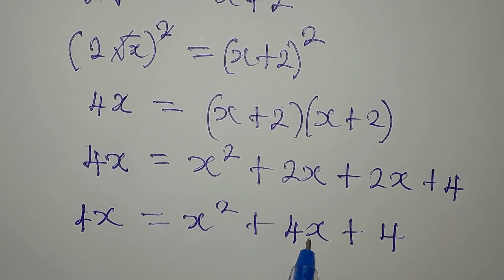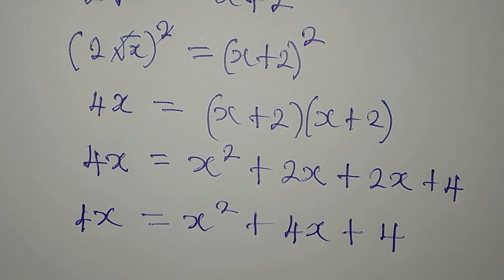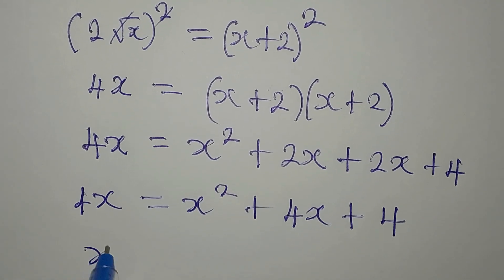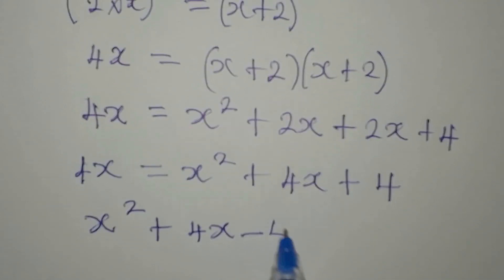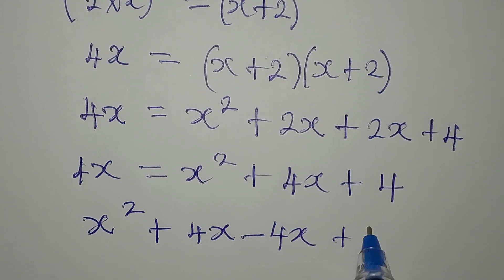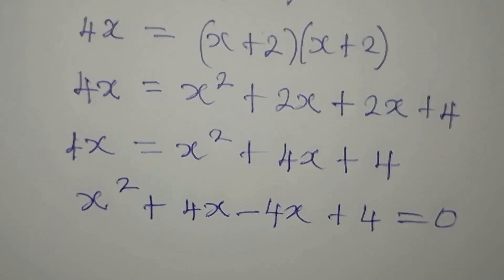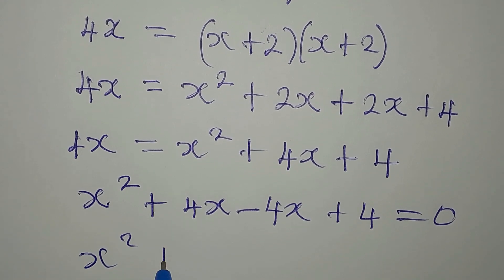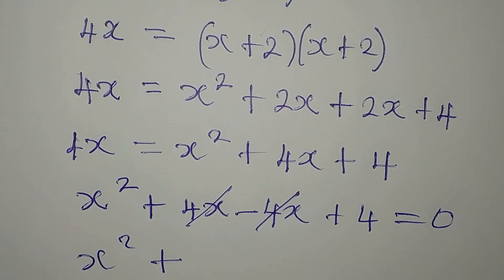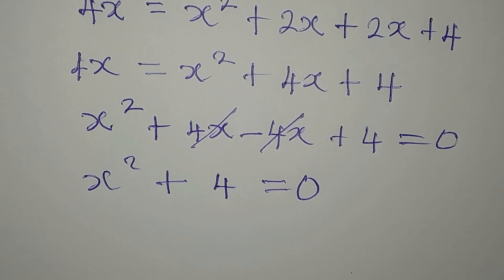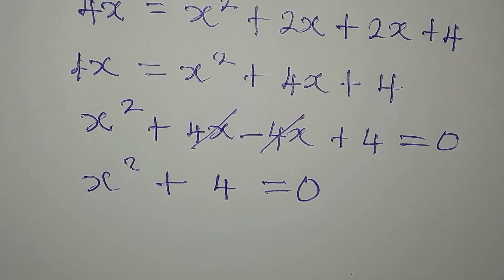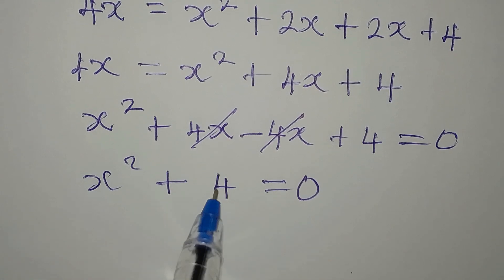Now let's rearrange. We can see there's 4x on both sides, so we move everything to one side. Writing it out: x squared plus 4x minus 4x plus 4 equals 0. The 4x terms cancel, leaving us with x squared plus 4 equals 0. This is a quadratic equation.